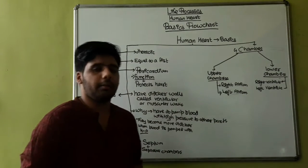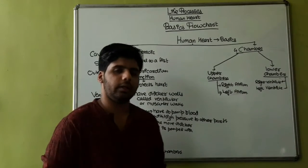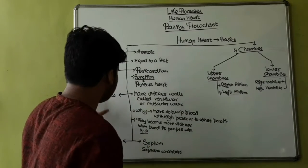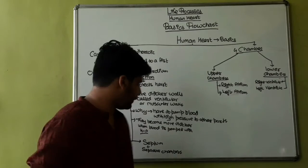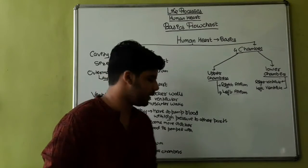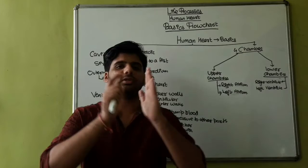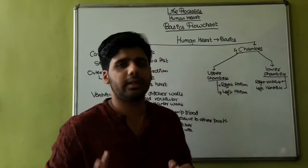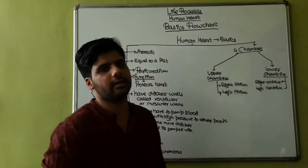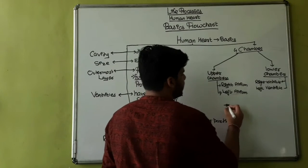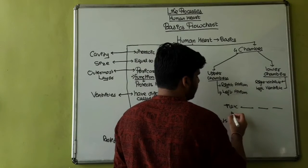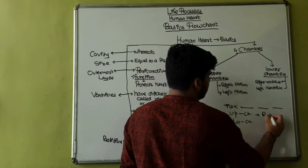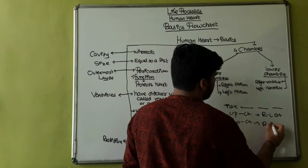That is why they have thick walls. The partition is called the septum. The septum separates the chambers. There are upper chambers and lower chambers — upper chambers: right and left atrium; lower chambers: right and left ventricle.